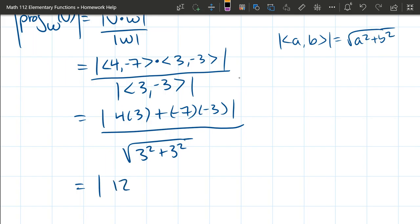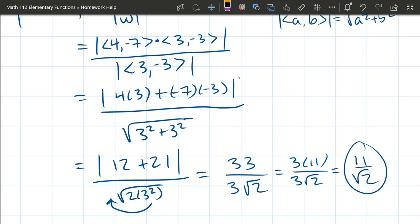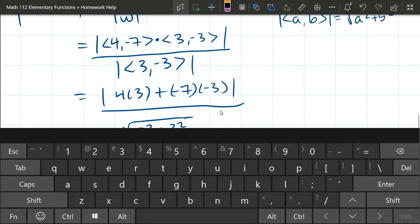Alright, 4 times 3 is 12, 7 times 3 is 21, those negatives cancel to be a positive. 3 squared plus 3 squared, that's going to be 2 times 3 squared. 12 and 21 is something, 33, hopefully. Don't need the absolute value because it's already positive. Now in the denominator, why did I write it like this? Well, 3 squared, you can bring that outside as a regular 3, and you're left with square root 2. Of course, 33 is 3 times 11. And you just cancel your 3's. You got 11 over square root 2. There we go. That would be the magnitude of the projection. There we go. Thank you.